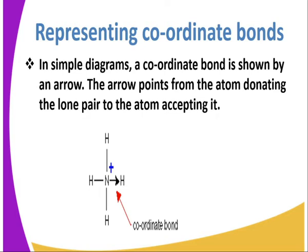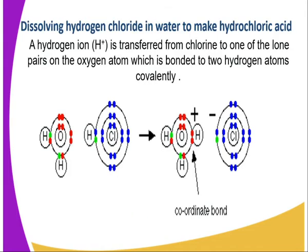Remember, it has accepted an ion — that is hydrogen — so it is positively charged. In addition to that, when you dissolve hydrogen chloride in water to make hydrochloric acid, the hydrogen ion is transferred from chlorine to the lone pair of the oxygen atom, which is bonded covalently to two hydrogen atoms. Using the diagram here, you can see we have water and hydrogen chloride — that is the bond between hydrogen and chlorine. Hydrogen chloride dissociates to hydrogen and chlorine, giving us a hydrogen ion, which is accepted by water, thus forming a dative bond.